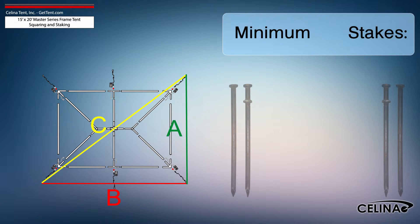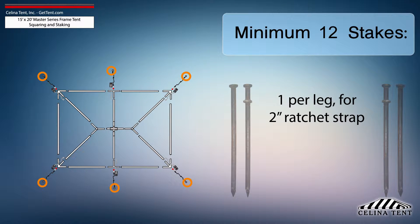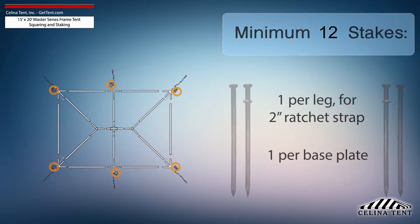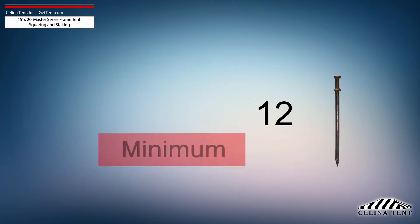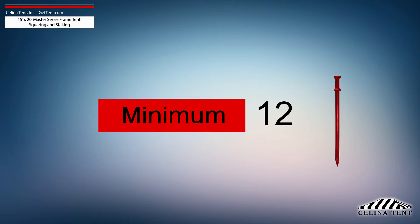Celina recommends that a 15-foot by 20-foot Master Series frame tent receives a minimum of 12 stakes: one stake at each leg for the ratchet strap and one stake for each base plate. This amount of stakes provides the minimum amount of security for a frame tent of this size.